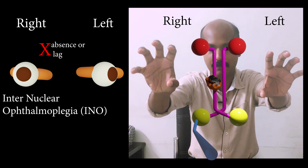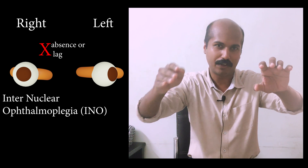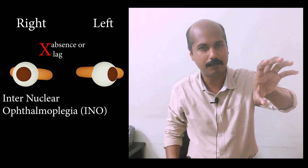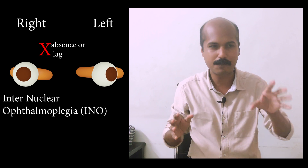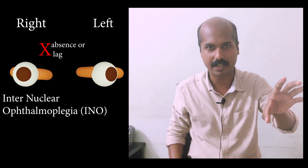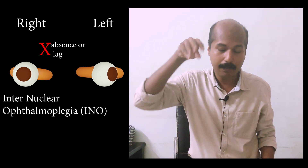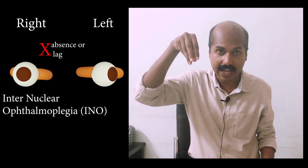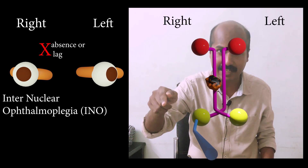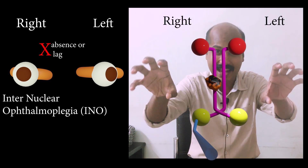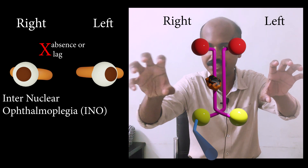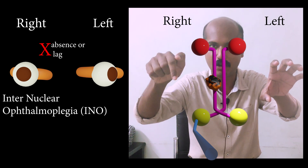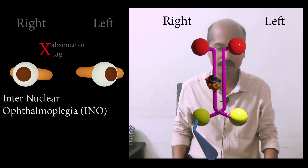Since the right eyeball is not going for adduction, the left eyeball can have a nystagmus. The complete mechanism is not clear, but it is probably a compensatory mechanism. By definition, a right MLF lesion causes a right INO — in a right INO, the right eyeball fails to adduct.